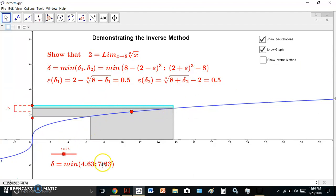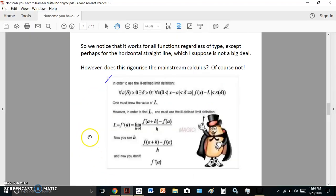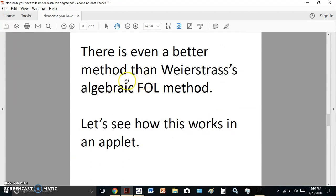So, at any rate, there is even a better method than Weierstrass's algebraic first-order logic method. And it's actually a geometric method. So let's see how this works in an applet.